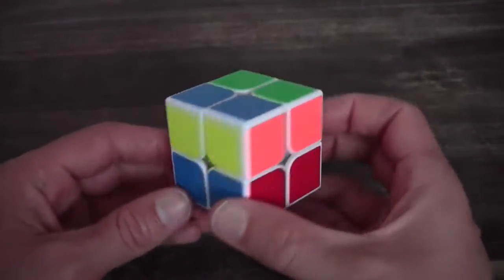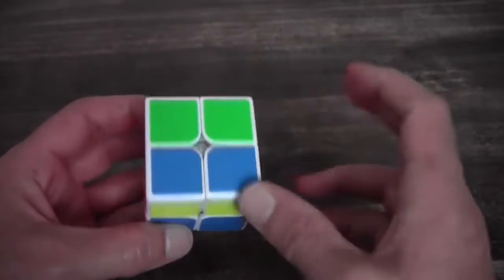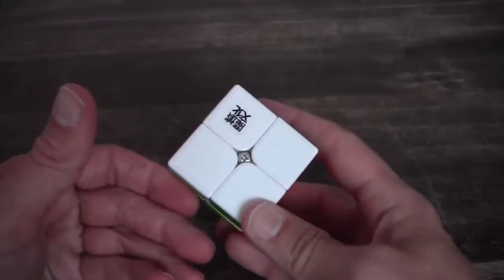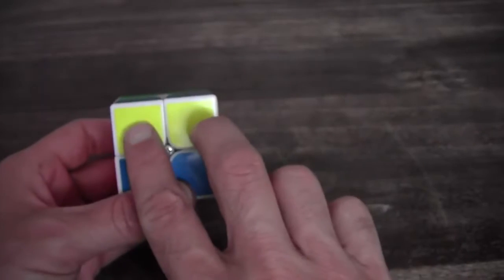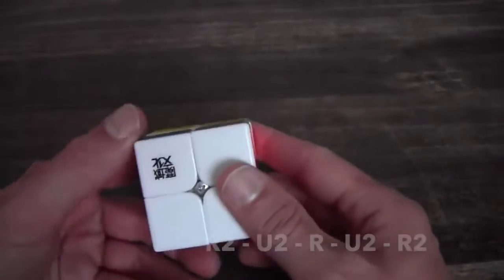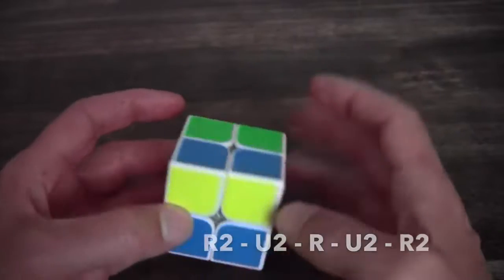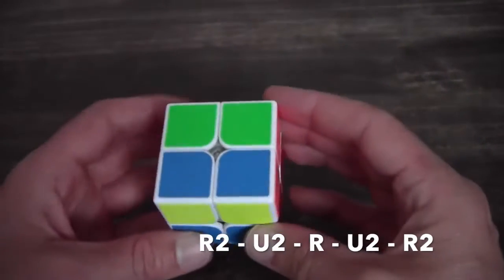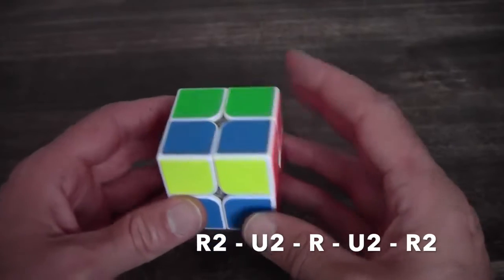So we start with the first case and that is where you have a block in front. So two yellow - the yellow has to go there because white is solved on the bottom. It's better if you do it color neutral but in this tutorial I'm only going to use white and yellow. So the yellow two blocks here and two blocks on the back. And you can perform the following algorithm.